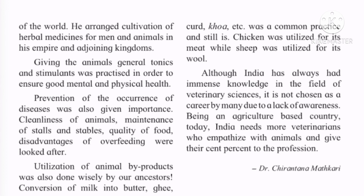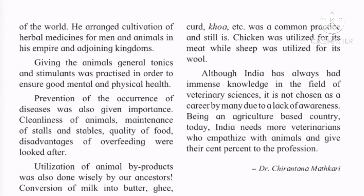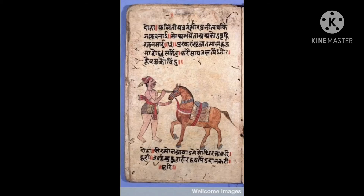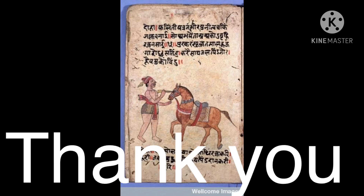I hope you have understood the chapter and the message Dr. Chirantana Mathkari wanted to give us all — to think about animals as living beings and treat them well. In this lesson, we also learn that the student-teacher relationship should always involve full contribution from both sides — only then is knowledge gained. Sushruta observed his teacher and understood the three principles used to treat any animal. Always observe good qualities of your parents, teachers, siblings, and friends, and utilize them in your own life. Thank you.